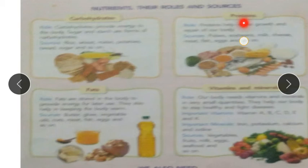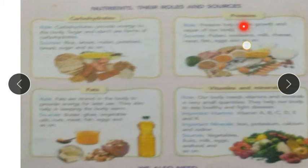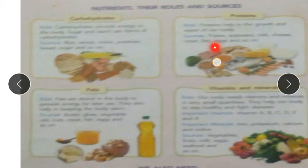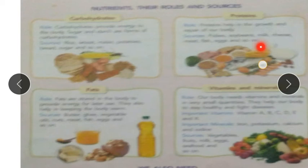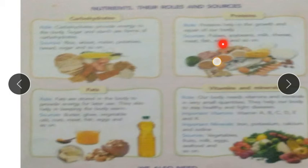Next is protein. Protein helps in the growth and repair of the body. It helps your body to grow and repairs it — for example, if you get an injury, eating protein-rich food helps your body repair faster. Sources of protein include pulses, dal, soya beans, milk, cheese, meat, fish, eggs, and so on.